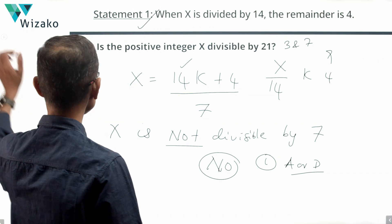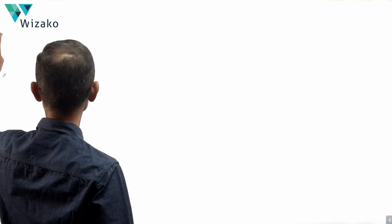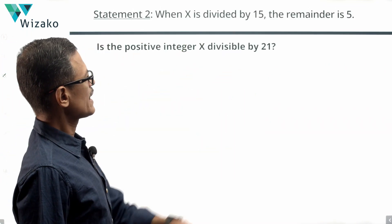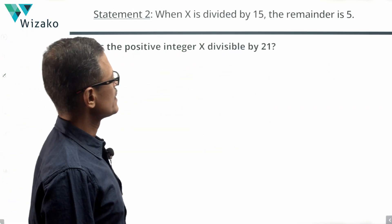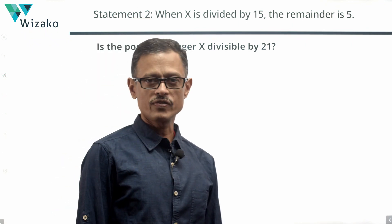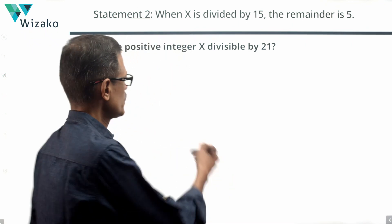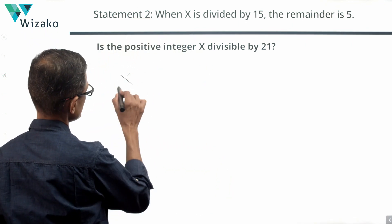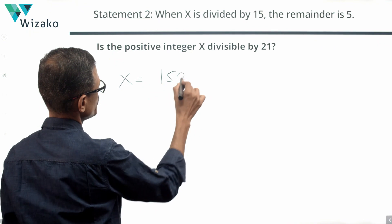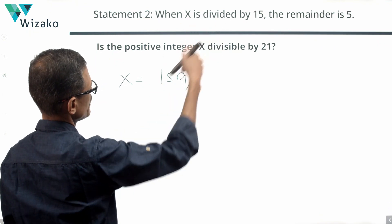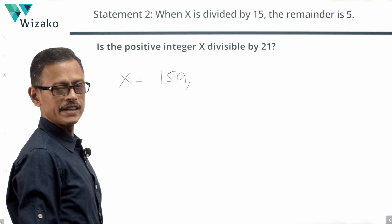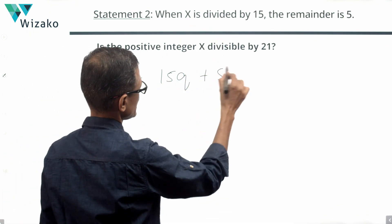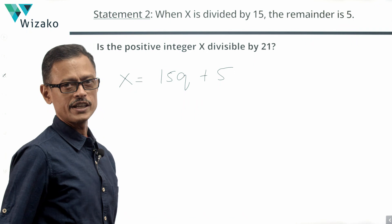Now take a look at Statement 2. When x is divided by 15, the remainder is 5. So x = 15q + 5 is the kind of number we are talking about.